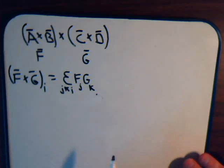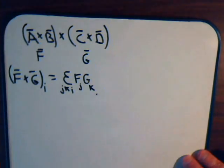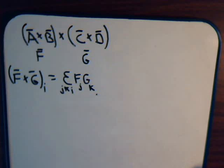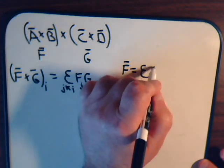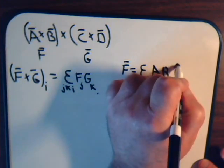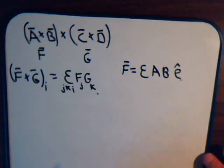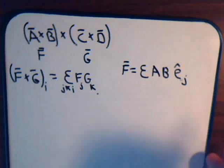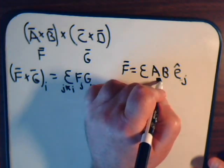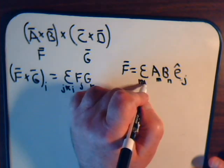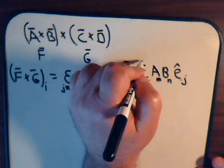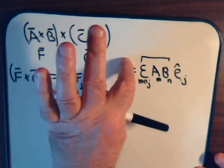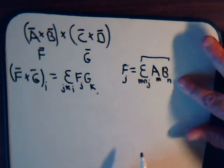Now f of j, f itself is the cross product of these, so we should be able to get an expression for this in terms of an epsilon symbol and vectors a and b. So we can say vector f equals epsilon a, b, and some unit vector. And we want the j-th component, so we'll call this unit vector j, and then we had labels m and n, so this is m and j, and the j-th component of vector f is just this portion, so say f of j equals that.